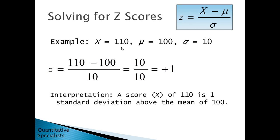In this first example, we have x of 110, a mean of 100, and a standard deviation of 10. Plugging into the formula: 110 minus 100 over 10 equals 10 over 10, which is positive 1. We interpret this as: a score of 110 is one standard deviation above the mean of 100 — above because it's positive, and one standard deviation because z equals 1.